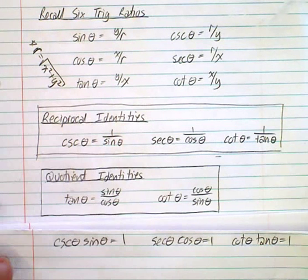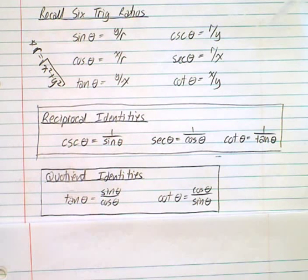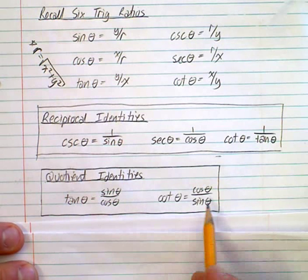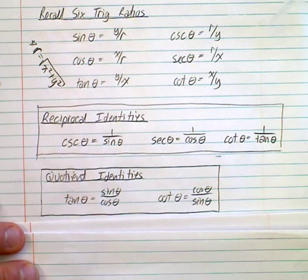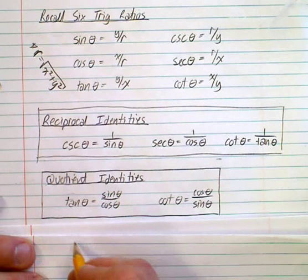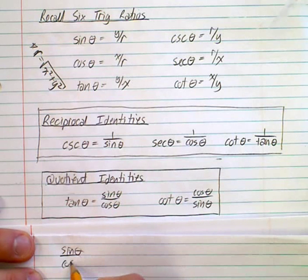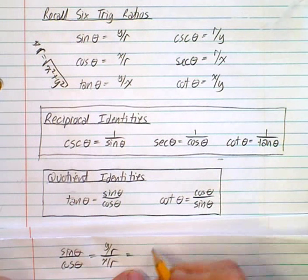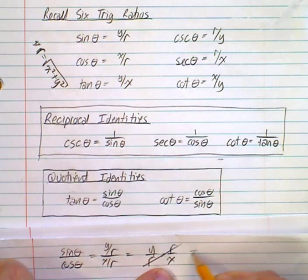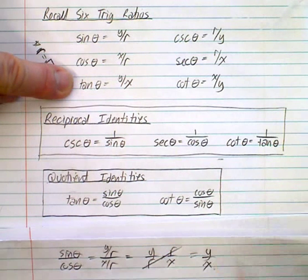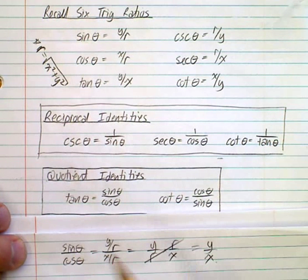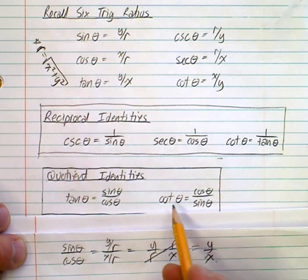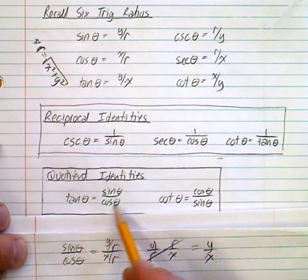The next ones are quotient identities. Tangent theta equals sine over cosine, and since cotangent is the reciprocal of tangent, cotangent equals cosine over sine. We can prove this: sine theta over cosine theta is (y/r) over (x/r), which rearranges to y/r times r/x — those cancel, and you get y over x, which is tangent theta. So we've proven the quotient identity using the basic trig ratios.